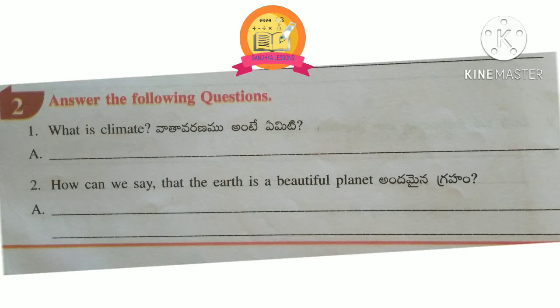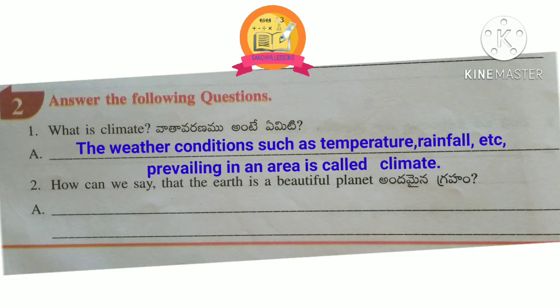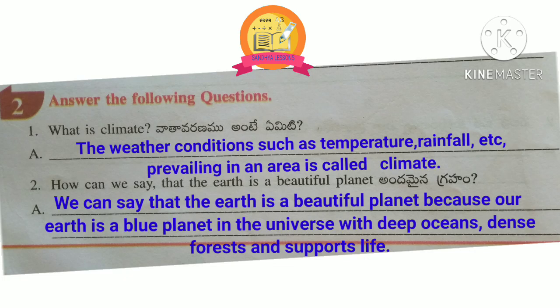Second Roman: answer the following questions. First question — What is Climate? The weather conditions such as temperature, rainfall, etc. prevailing in an area is called Climate.